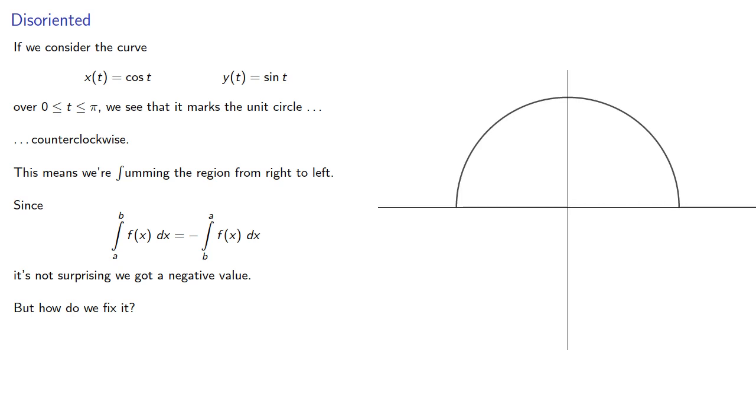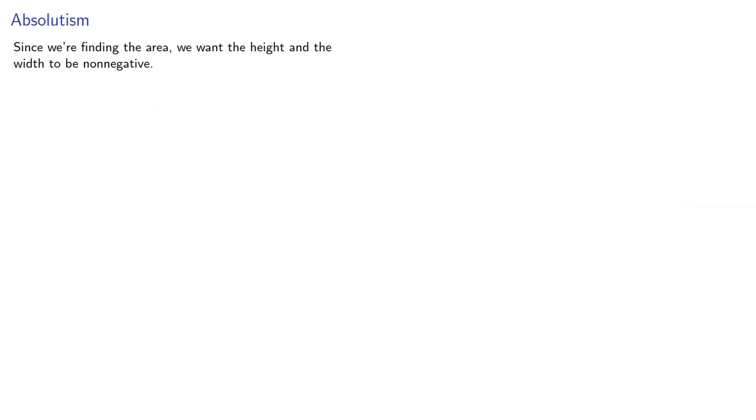But how do we fix it? Since we're finding the area we want the height and the width to be non-negative. So we have two choices. We can either do a re-parameterization so that these are non-negative. Or we could use absolute values. And while we should re-parameterize it's often easier to use the absolute value of our differential.